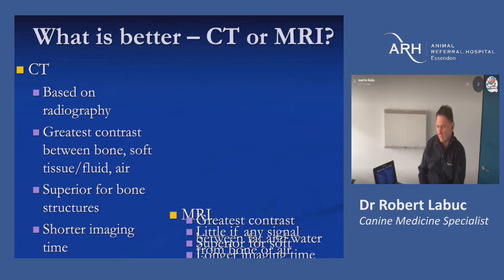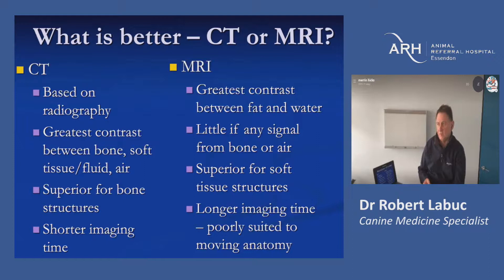For MRI, the greatest contrast is between fat and water, which is very useful for separating different regions of soft tissue. There is little or no signal from bone or air so they go into the background, and MRI is superior for soft tissue structures. However, imaging time is longer, which usually means an anaesthetic is required, and any movement will cause artefact. Anything within the chest cavity is therefore not particularly well imaged without sophisticated machinery. If the area of interest is near the ribs or diaphragm, even within the abdomen, there can be enough movement to reduce image quality.